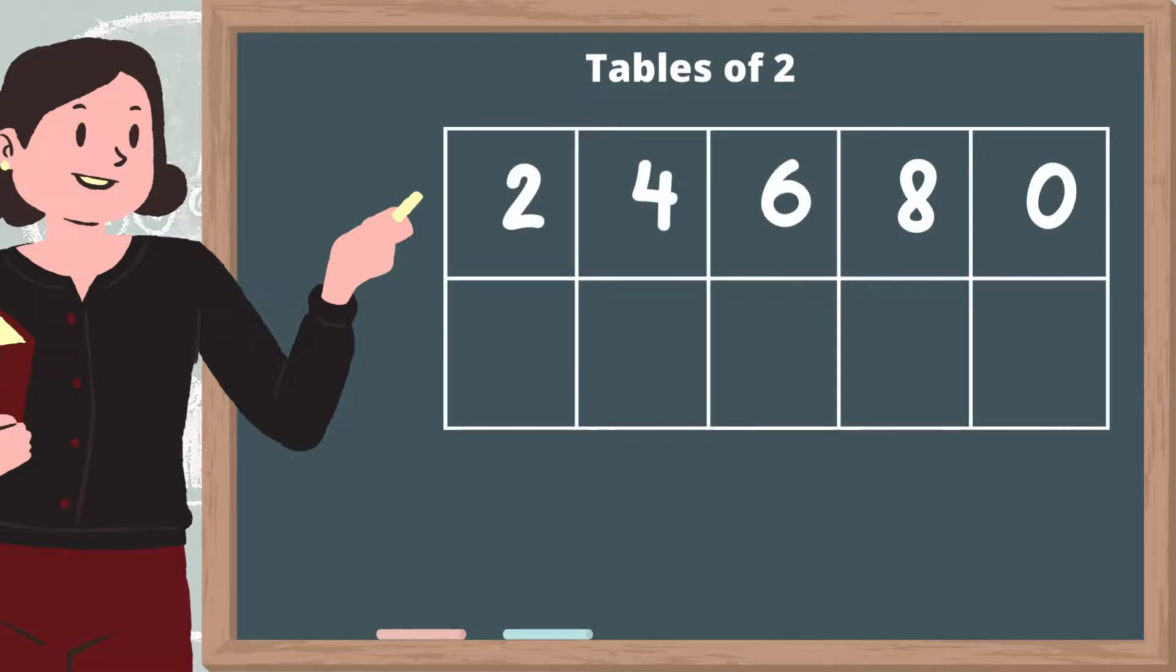Then next, write numbers two, four, six, eight in ones digit and add zero at the end.